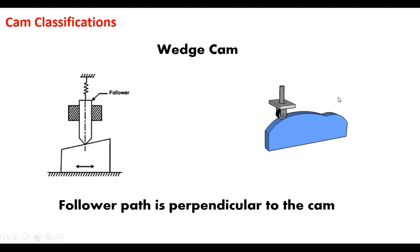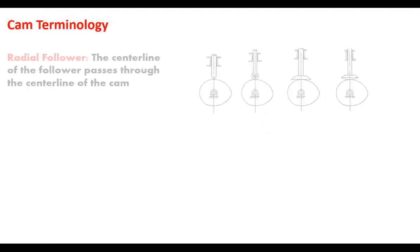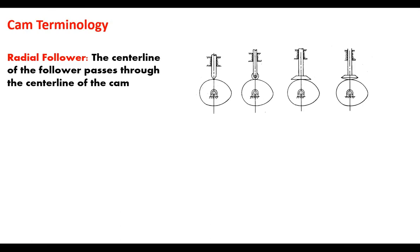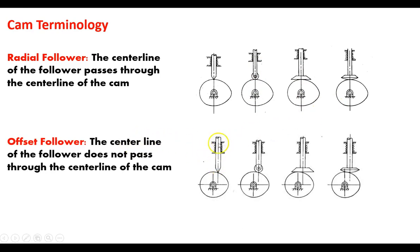Moving on to more terminology — what we've looked at up to now has been radial followers, where the centerline of the follower is in line with the centerline of the cam's rotation. But there is a different type called the offset follower, where the centerline of the follower is offset from the rotation. This changes how that rise and fall takes place, since the max height of the cam changes relative to where the follower is in relationship to the axis of rotation.